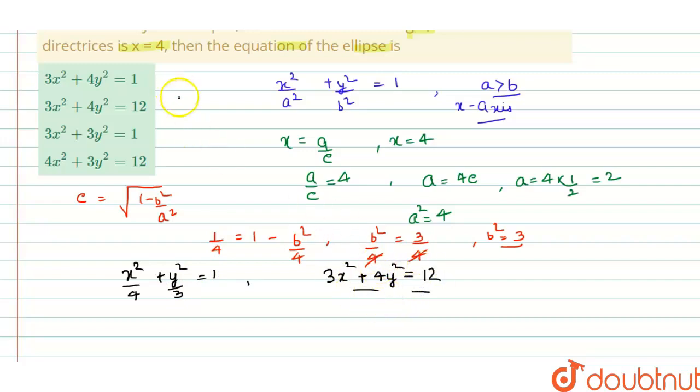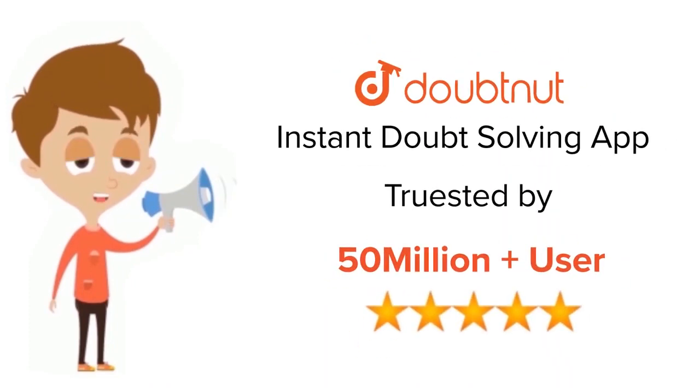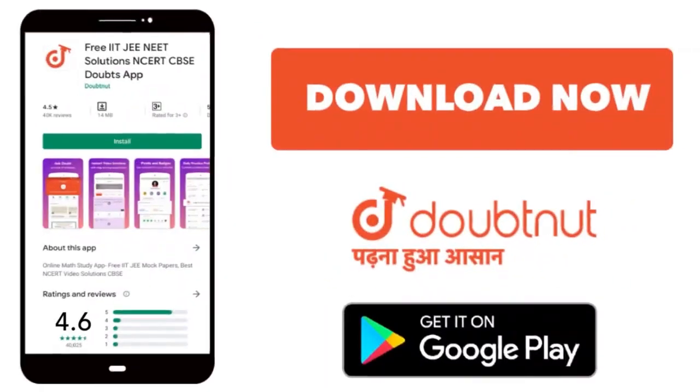Let us match the options. It is matching with our option, option B. Hope you understand this solution. Thanks for watching the video. For class 6 to 12, IIT-JEE and NEET level, trusted by more than five crore students, download Doubtnut app today.